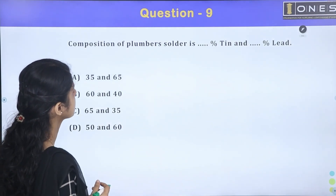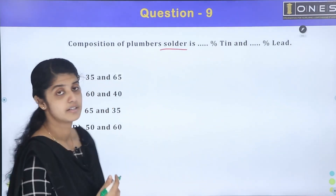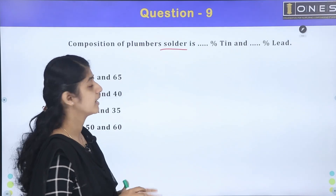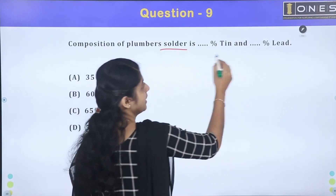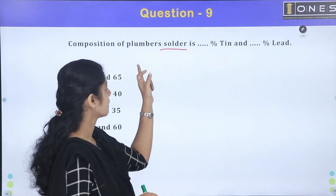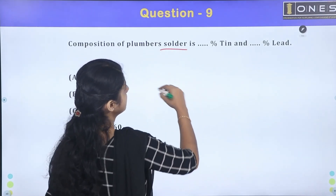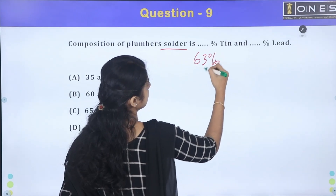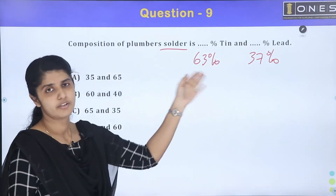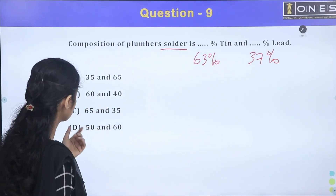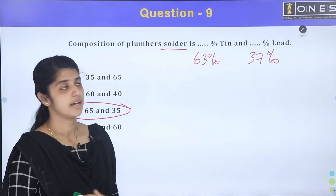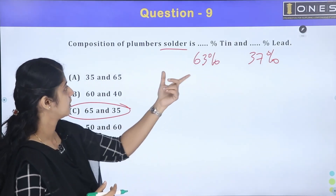The composition of plumber's solder: solder is a combination of tin and lead. As a solder material, it is composed of tin plus lead. The standard composition is 63% tin and 37% lead. The option given here is approximately 65% tin and 35% lead.